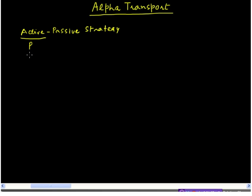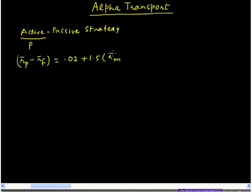What you do then is use the single index model and find that the average excess return on portfolio P can be described through the following equation. The average excess return on this active portfolio P is described by a positive alpha of 0.02, plus a beta of 1.5 times the average excess returns from the market, plus the error term E, which captures the unsystematic part of the return.